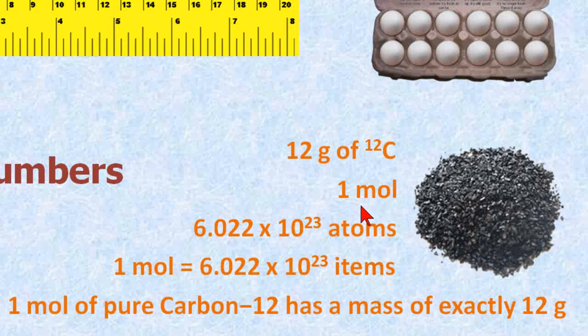That's actually the definition of a mole. One mole is 6.022 times 10 to the 23 items. And that's actually how we define a mole, based on 12 grams of carbon-12. It's an exact number.